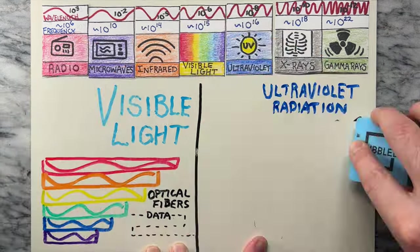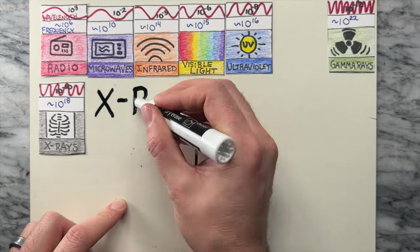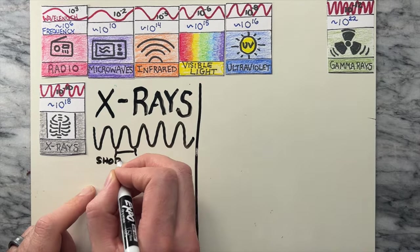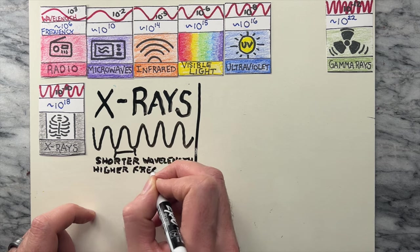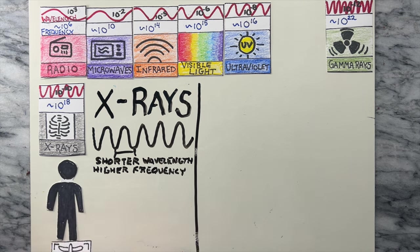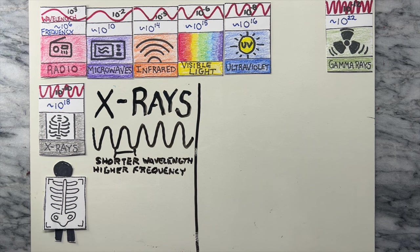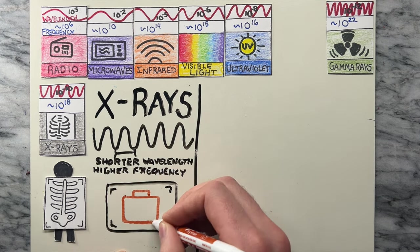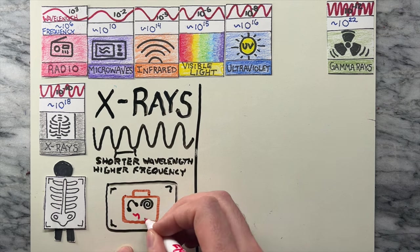The last two in the electromagnetic spectrum are x-rays and gamma rays. With shorter wavelengths than UV, x-rays enable us to peer inside objects and living tissues, revolutionizing medical diagnostics by visualizing the inside of the body, as well as being used in airport security scanners to examine luggage and belongings.